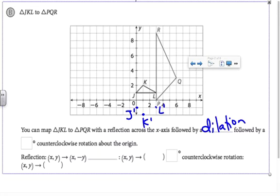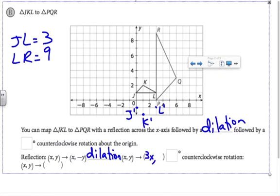From there I would need to figure out the scale factor of the dilation. Hopefully you notice that JL corresponds to LR, so the length of JL is 3 whereas the length of LR when I count the spaces is 9, so that means I have a scale factor of 3 in order to go from triangle JKL to PQR. Dilation with a scale factor of 3 means (x, y) becomes (3x, 3y), and that triangle would be sketched about here.